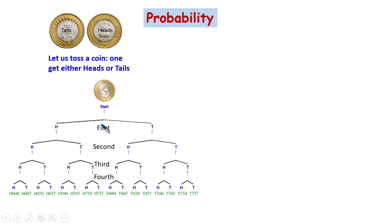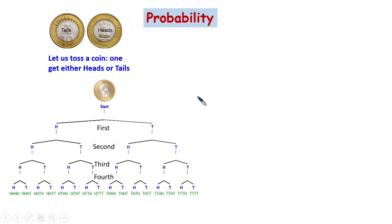If you start tossing the coin, in the first toss you take one coin only — you get head or tail. Suppose you get head; again you toss it. In the second toss you can either again get head or tail. Similarly, if you have a tail in the first toss, in the second toss you can get head or a tail. We will discuss this in the next few slides.